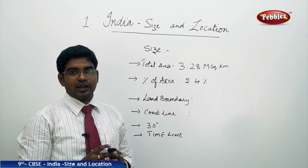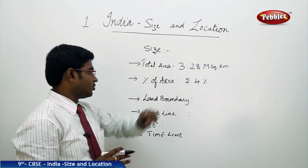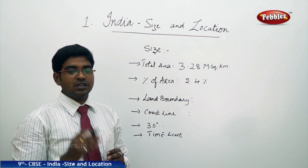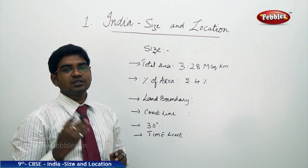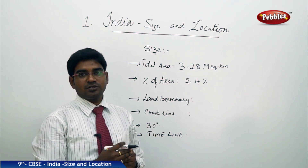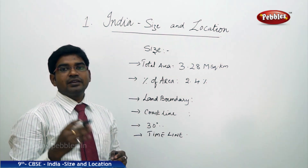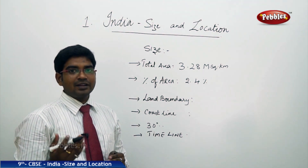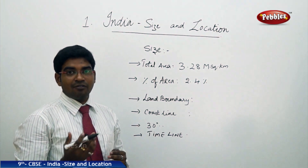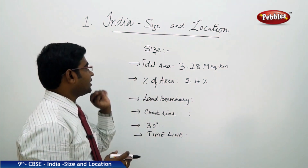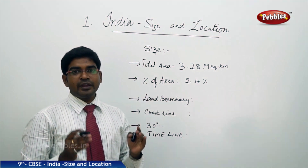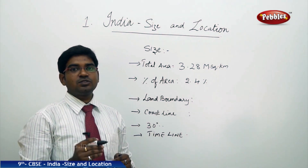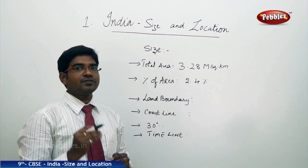India covers a large region under its influence. But India stands at the 7th place, while Russia with 17 million square kilometers stands at the first place, followed by Canada, then the US, China, Brazil, and other countries. India stands at the 7th place. So India is the 7th largest country in the world in terms of geographical area.